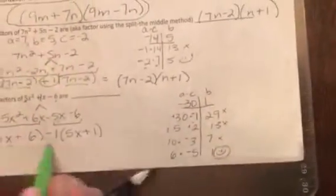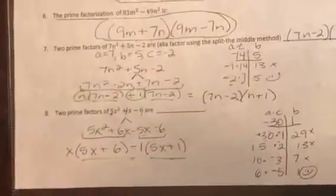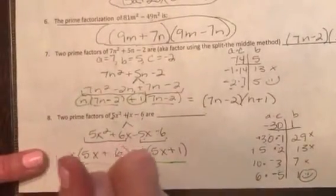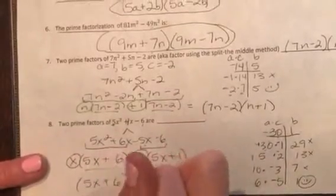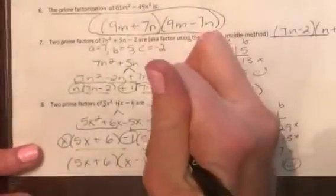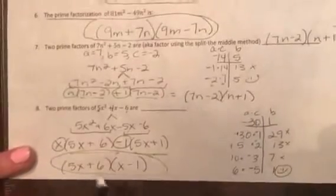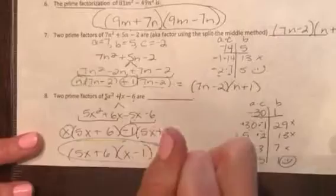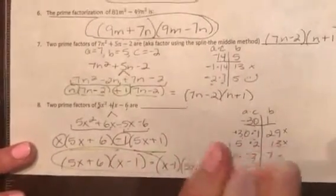And we see the 5x plus 6 in common. So that is our first group. 5x plus 6. And the x and the minus 1 is in common. So that becomes, or sorry, are the leftovers. And so that's our second group. And these can be written in either order. So it would be the same thing if you wrote, or it would be equivalent to write x minus 1 times 5x plus 6.